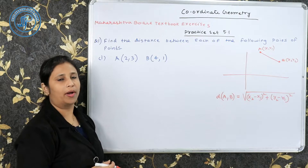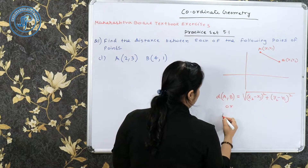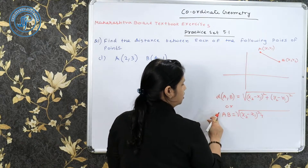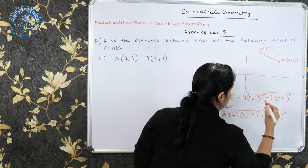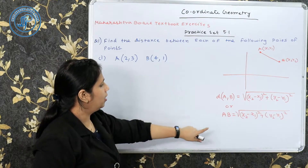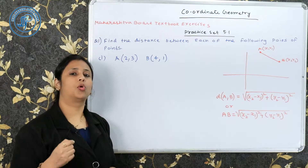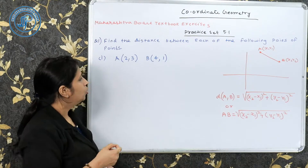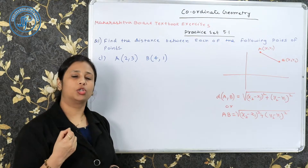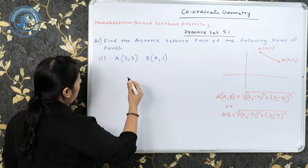This is the distance formula. आप इसको 'd(A,B)' या फिर normal 'AB' ऐसे लिखके भी represent कर सकते हैं। 'd' signifies the distance calculated between A and B. इसको apply करने के लिए छोटी-छोटी बातों का ध्यान रखना है — plus/minus में जहाँ students की ज़्यादातर mistakes होती हैं, वो मैं video में बताती रहूंगी।